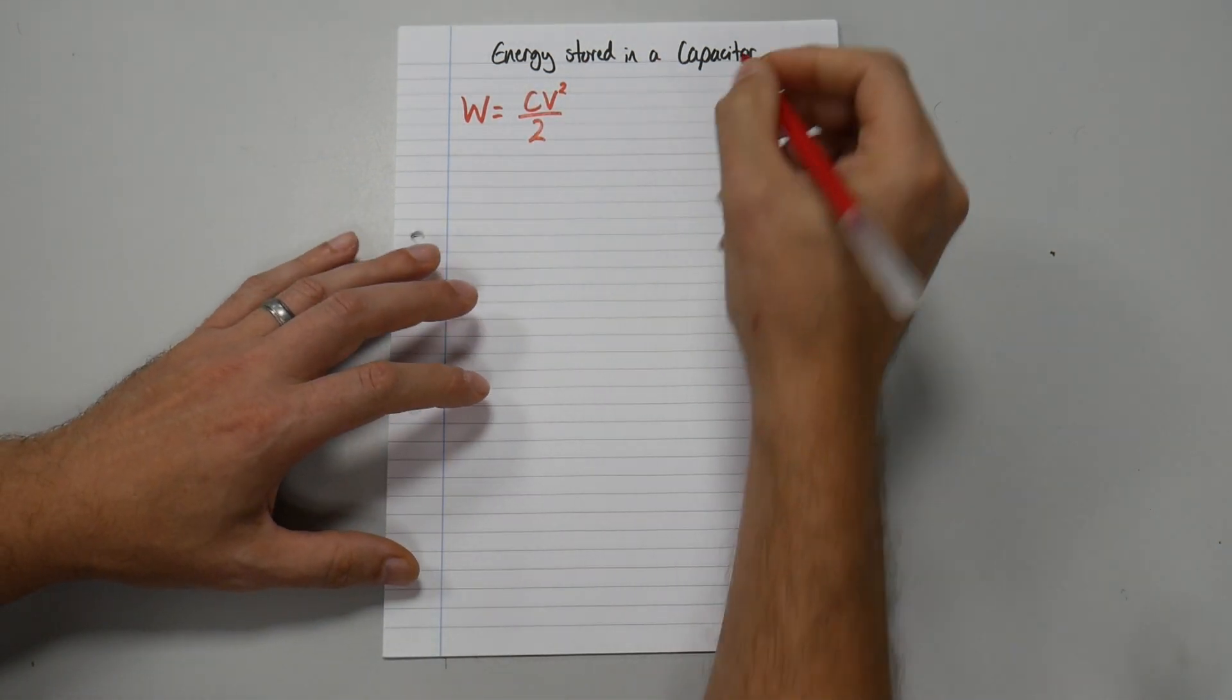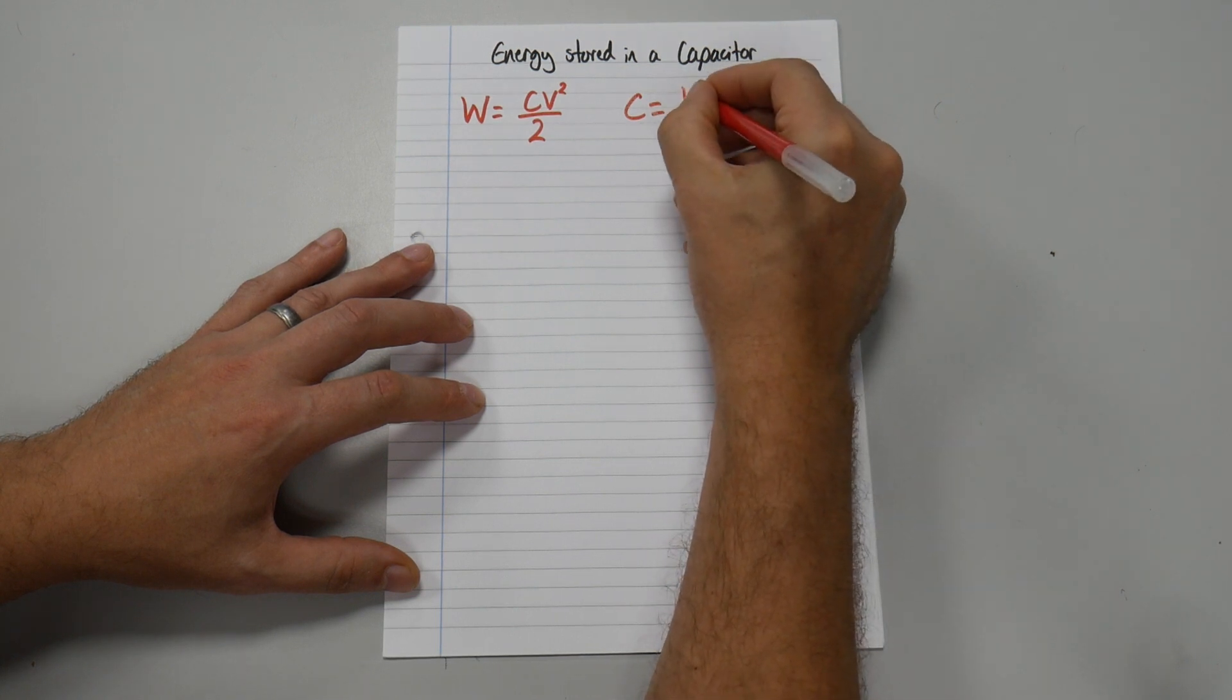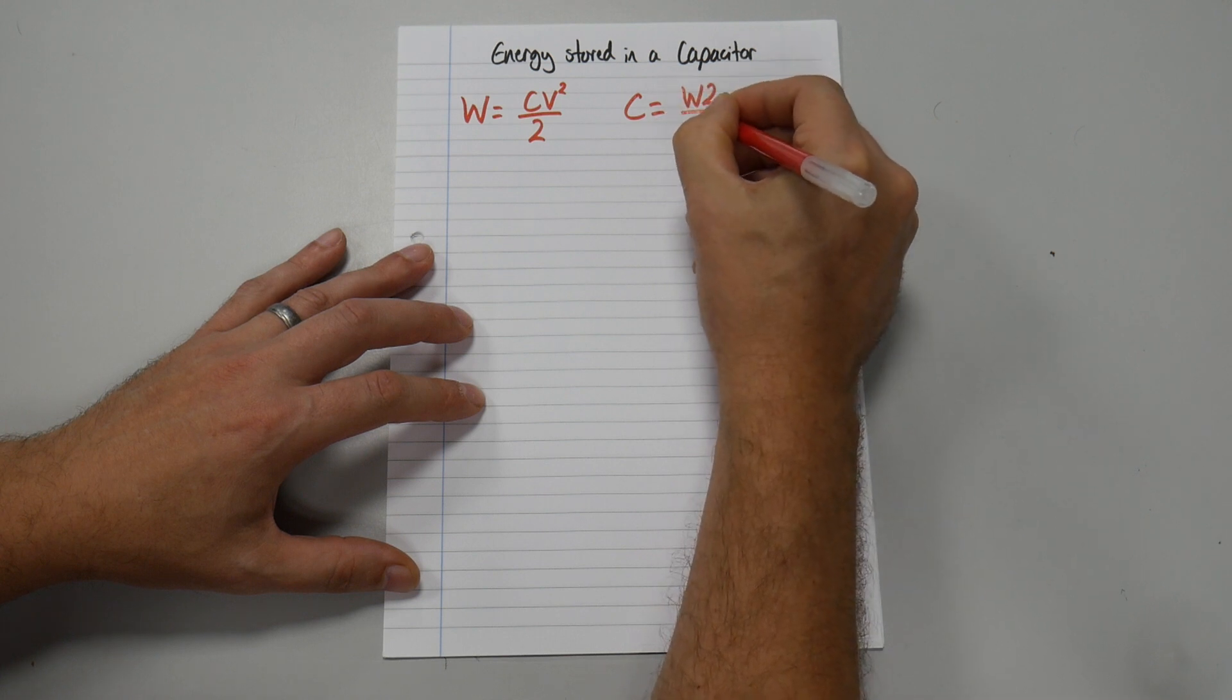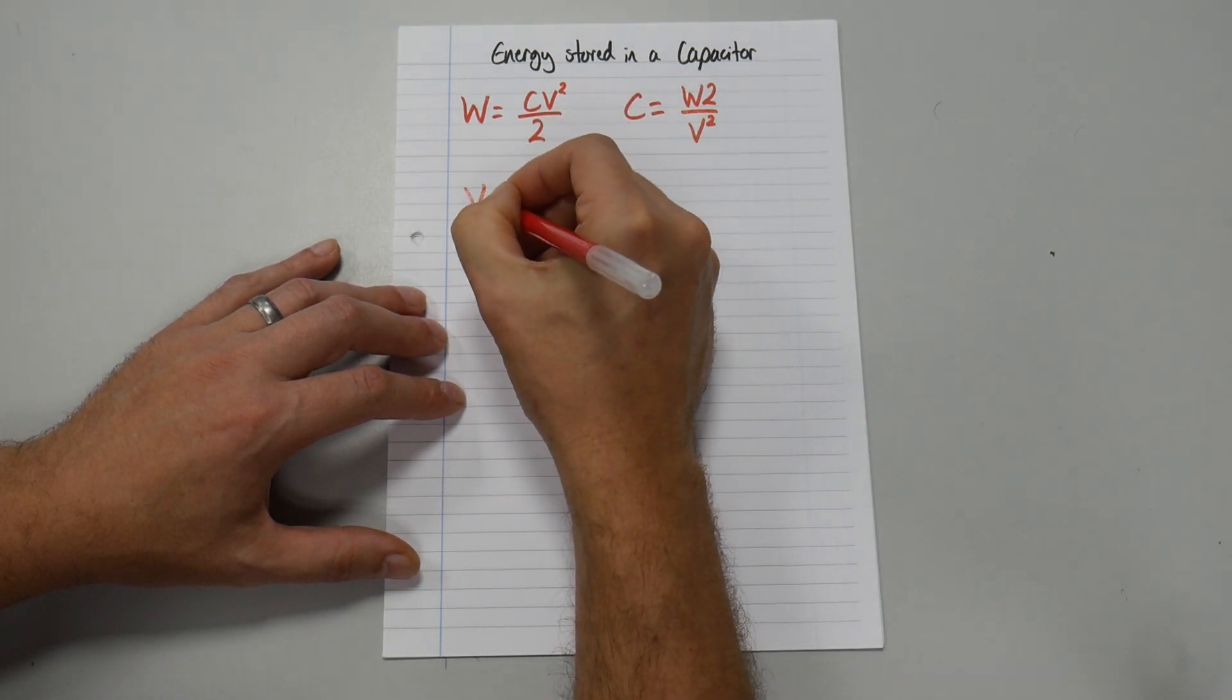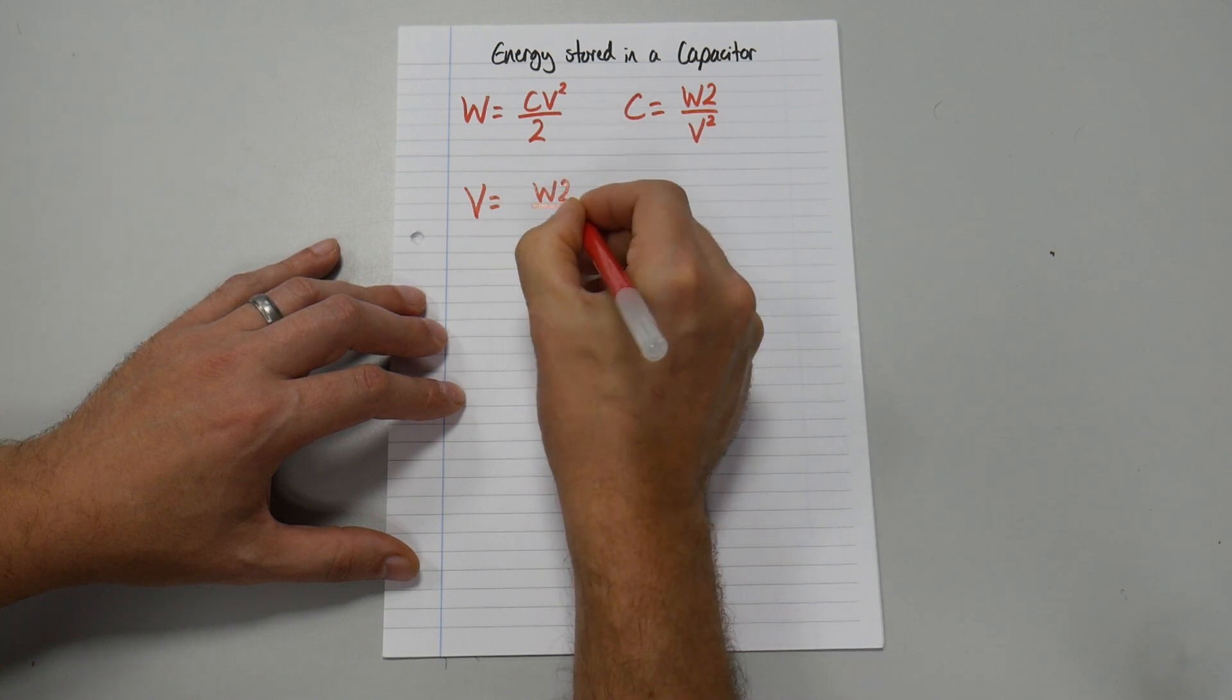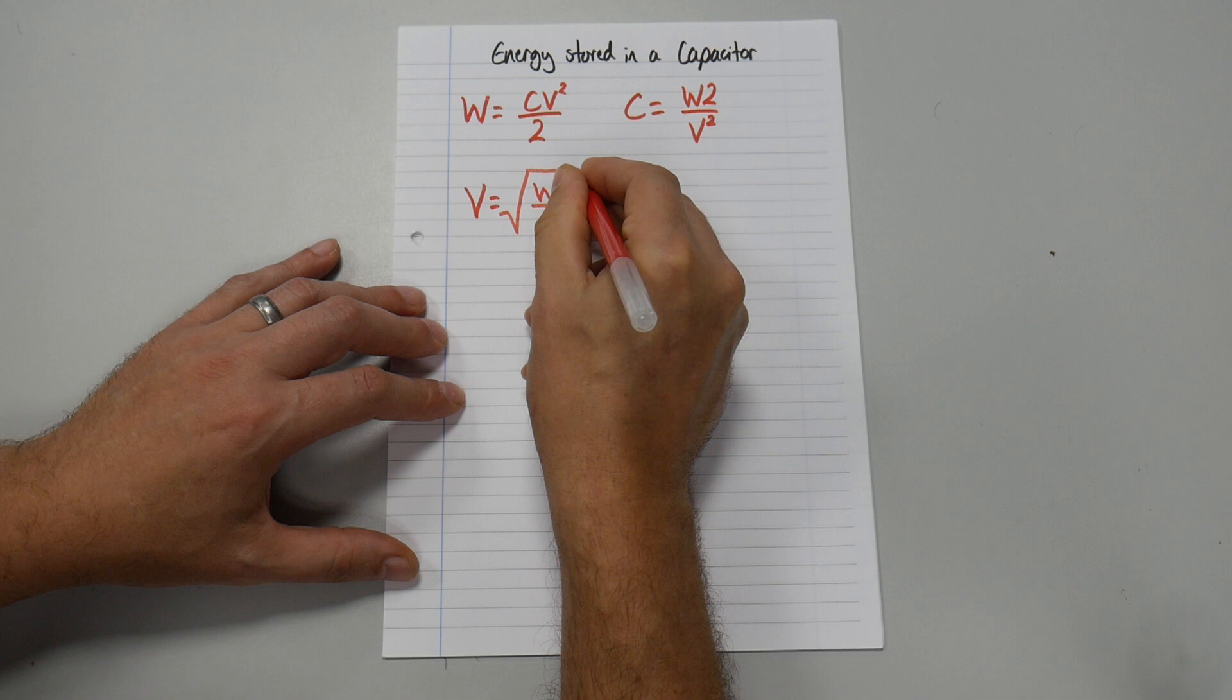And let's transpose this formula for you. So let's do C. So C equals 2W over V squared. And the last one will be V equals square root of 2W over C.